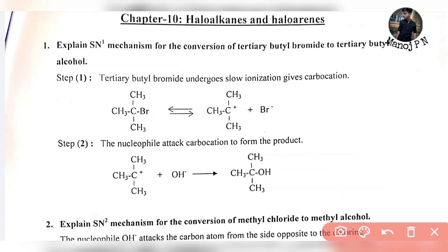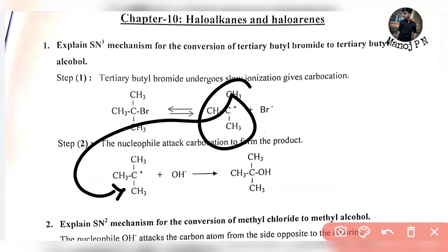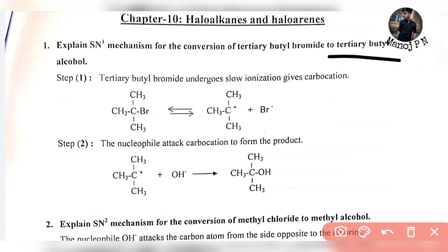This is the carbocation — that is the first step. So this is the nucleophile attack. This is the nucleophile attack. This is OH⁻, which belongs to the alcohol group. These two combine. You will get the product which is required — tertiary butyl alcohol. This is SN1 reaction.